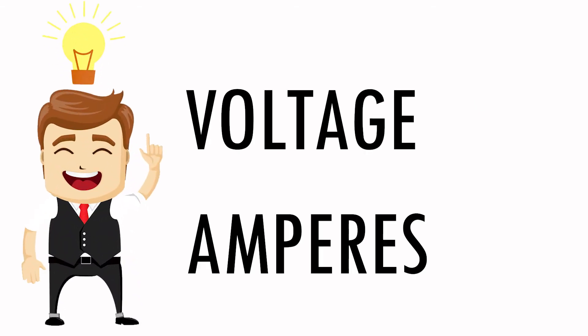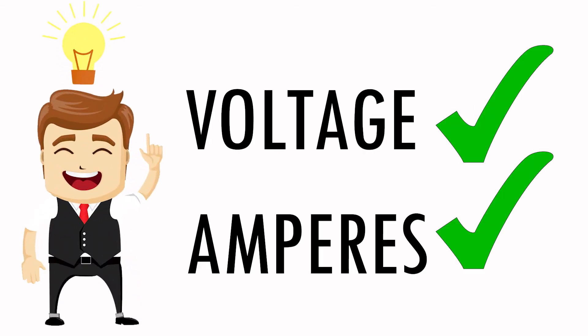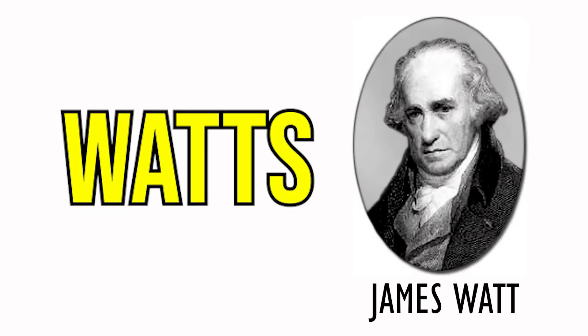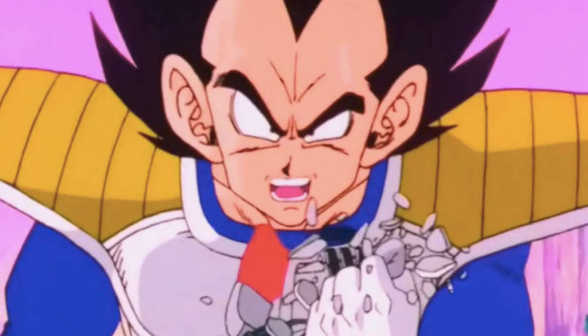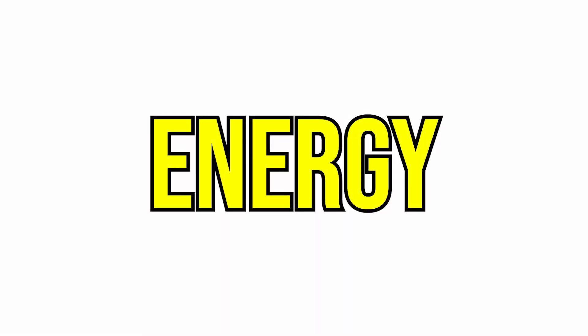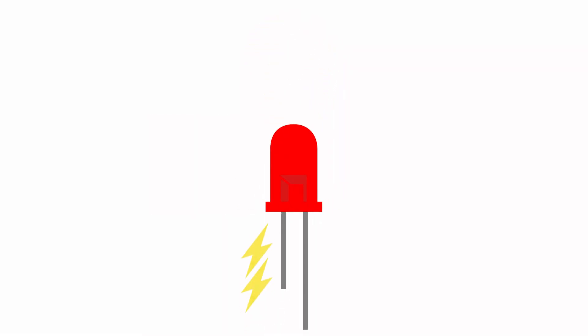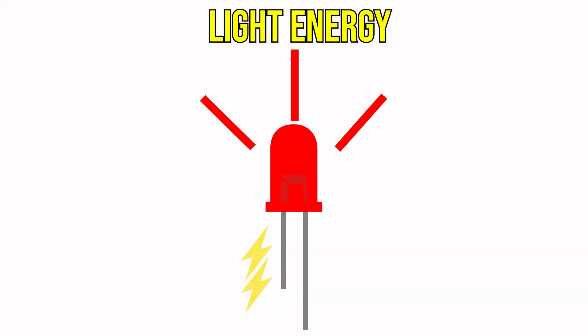Since we already know voltages and amperes, we can now proceed to watts or wattage — a unit of power. So in a circuit, the electricity we use will be converted to energy, like LEDs converting electricity to light energy or heat energy.